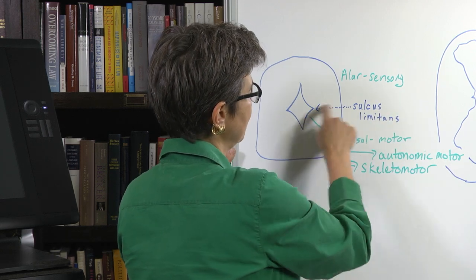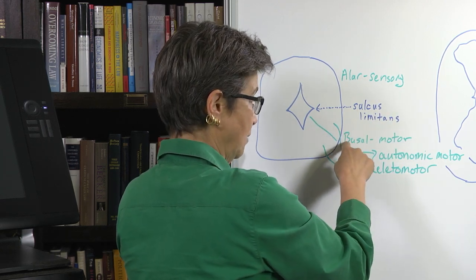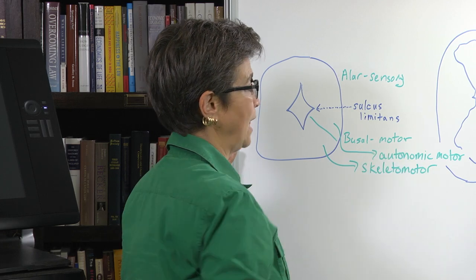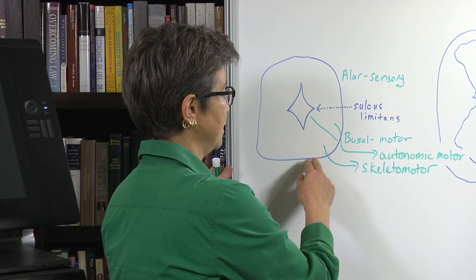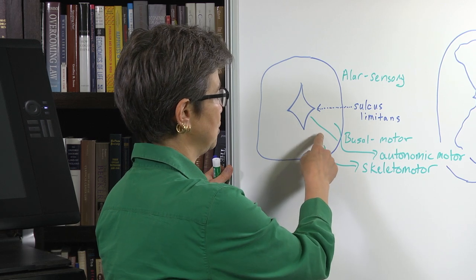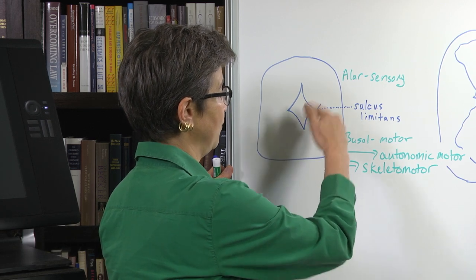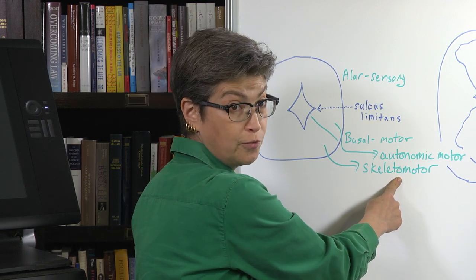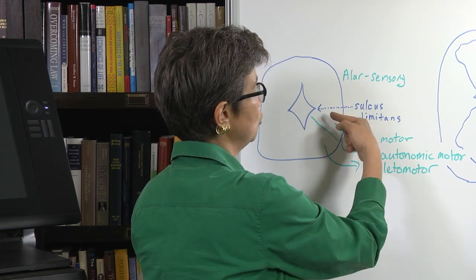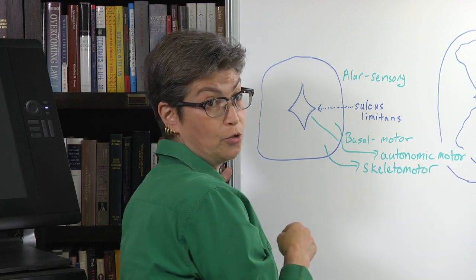Everything ventral to that is part of the basal plate and will have a motor function. And in the basal plate there is a further delineation between a more ventral group which serves skeletal motor or voluntary motor function and a more dorsal group that serves autonomic motor function.